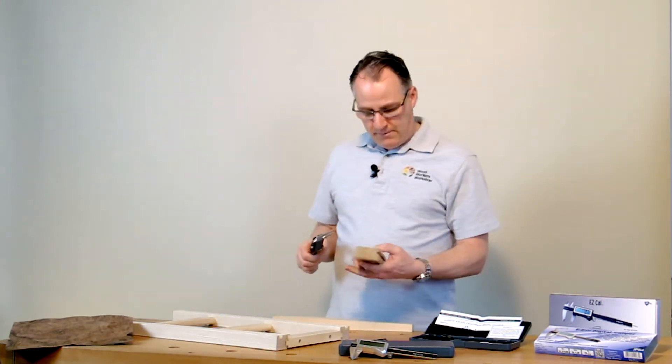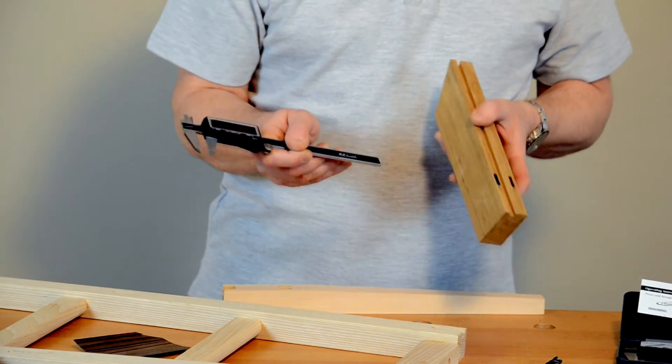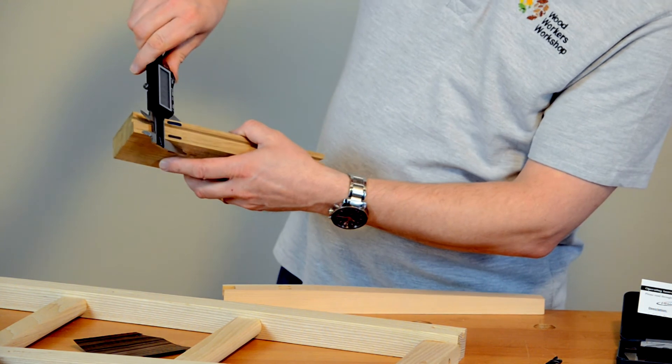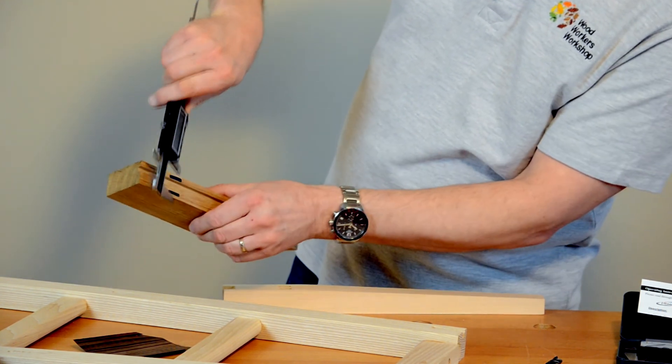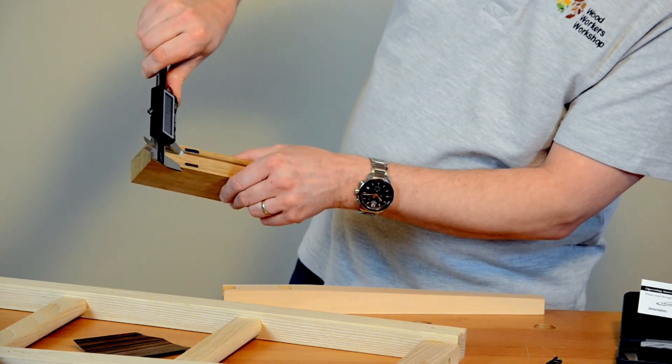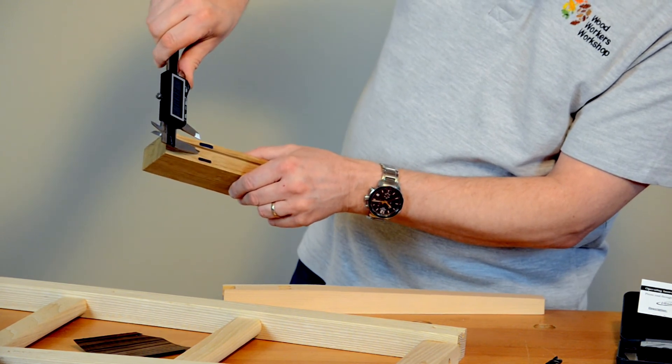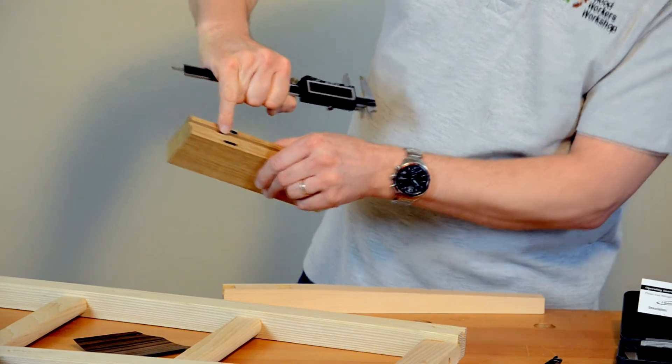When we have a piece of timber like this and we're trying to measure from this edge to the far edge of the groove, that's a tricky thing to measure. But if you take the caliper, measure the overall size of the timber and turn that to zero, then measure the remainder piece, that will tell you what the size is from here to the edge of that groove.